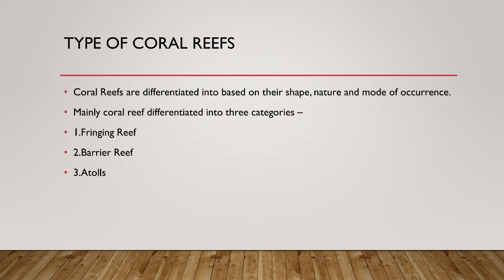Coral reefs are differentiated based on their shape, nature, and mode of occurrence. There are three categories: the first is fringing reefs, the second is barrier reefs, and the third is atolls.